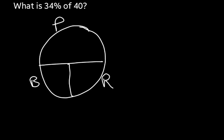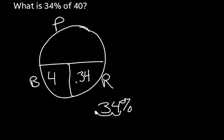We don't write the rate in our circle as a percentage — we write it as a decimal. So 34% as a decimal: we move the decimal place two spaces to the left, giving us 0.34. Now, 40 represents the base because what we're finding is what is 34% — a portion — of that number, 40. So 40 is going to represent our base number.